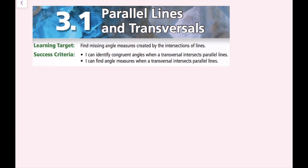In Lesson 3.1, Parallel Lines and Transversals, our learning target is to find missing angle measures created by the intersection of lines. The success criteria is: I can identify congruent angles when a transversal intersects parallel lines, and I can find angle measures when a transversal intersects parallel lines.